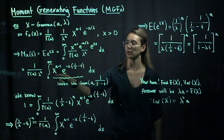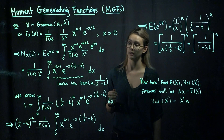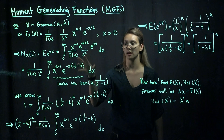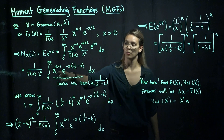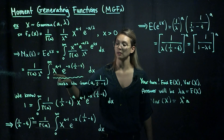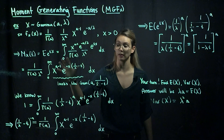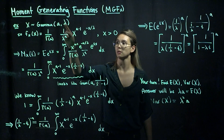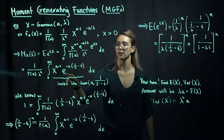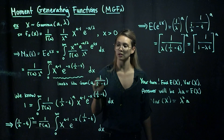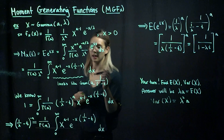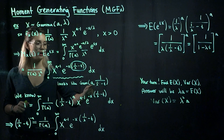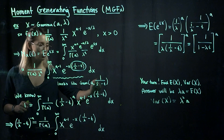Looking at this integral, it looks like we're integrating over a gamma distribution, because we're integrating from 0 to infinity and we have x to the something minus 1, and then e to the negative x times another something. So this is a gamma distribution, or at least part of one, with first parameter a — since we have x to the first parameter minus 1 — and the second parameter is 1 over lambda minus t, because for a gamma distribution the exponent should look like e to the negative x over the second parameter.